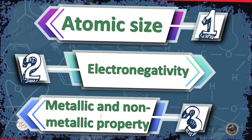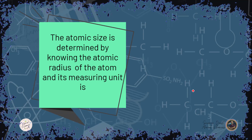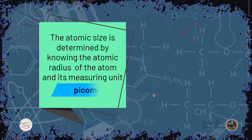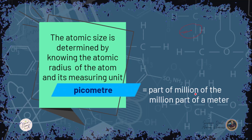First, the atomic size. The atomic size is determined by knowing the atomic radius of the atom. Suppose that the atom is like a ball, so the size of the atom is determined by the radius from the center to the outermost energy level. We measure the atomic size by a unit called the picometer, which is one part of a million million of a meter — equal to 1×10⁻¹² meters.